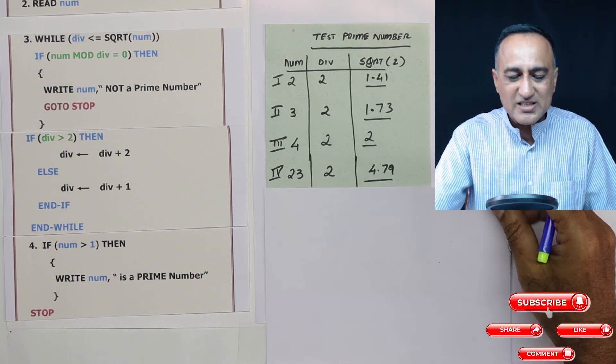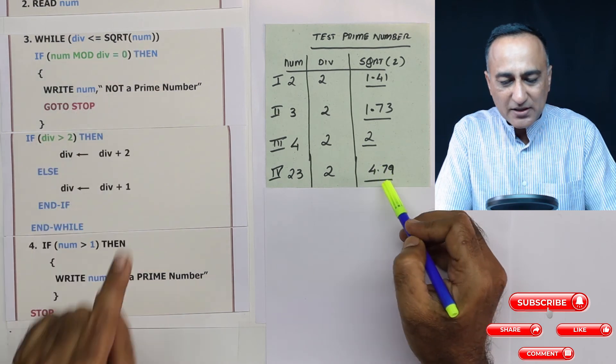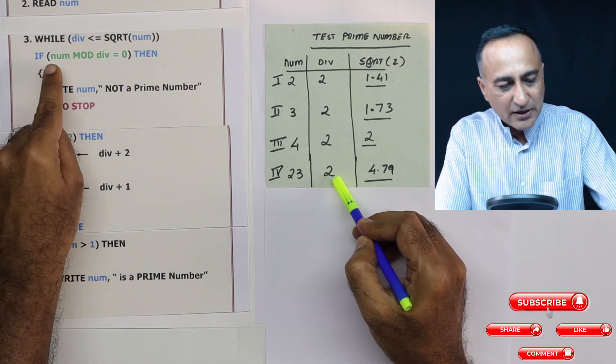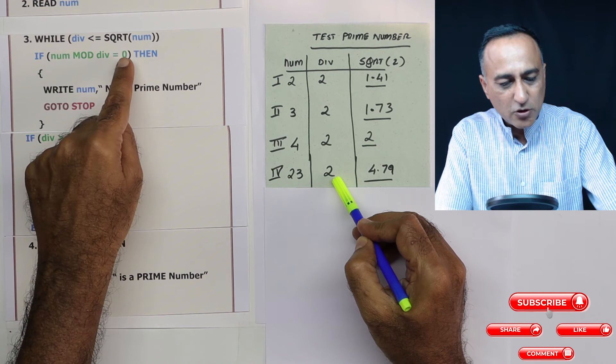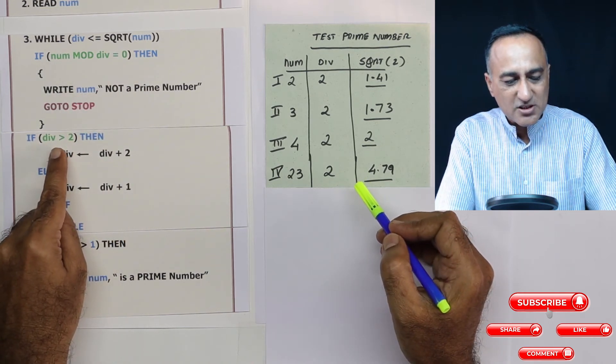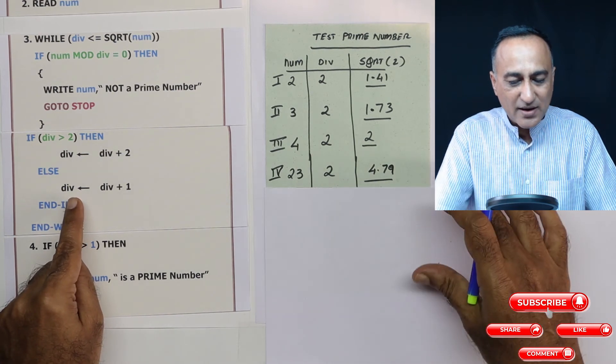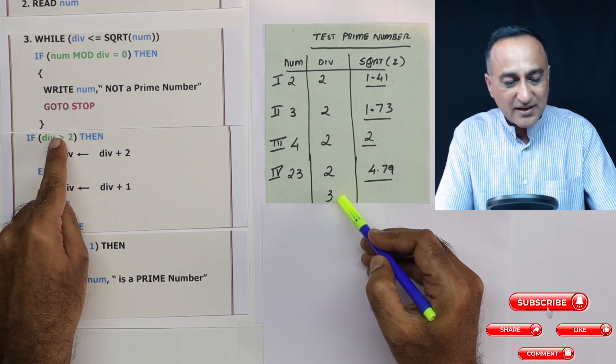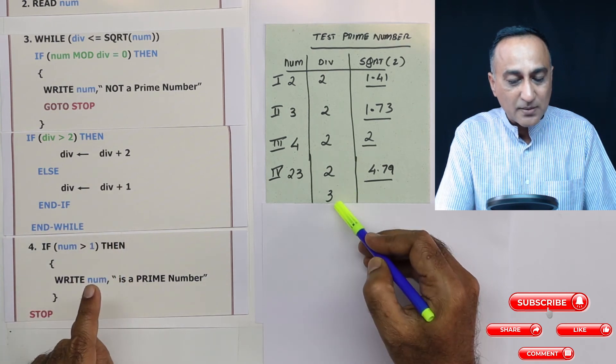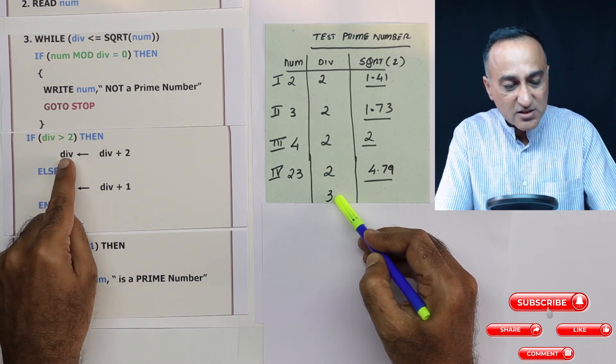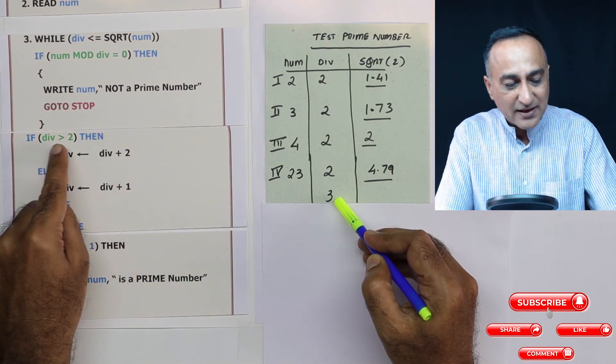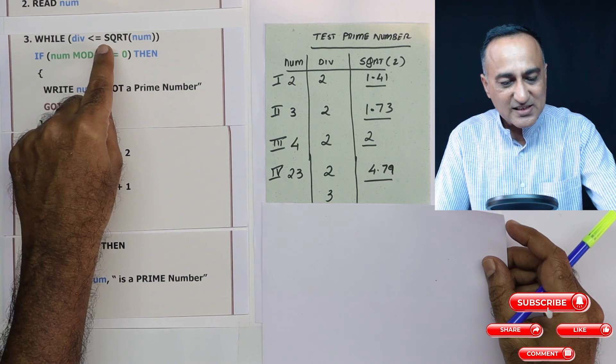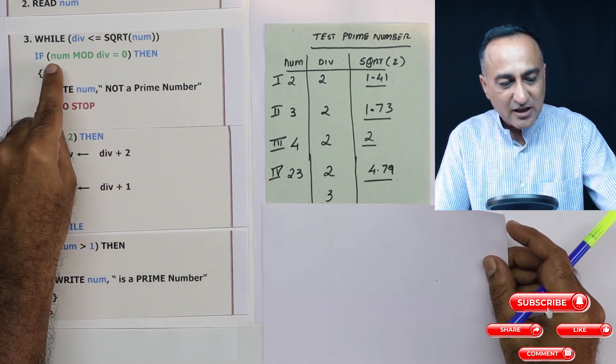Let's take now a number which is slightly higher, 23. Square root of 23 happens to be somewhere 4.79 or you can consider it equal to 5, divisor is 2. 23 mod 2, is it equal to 0? No. So I will come here, divisor is 2, is 2 greater than 2? No. So I will increase divisor by 1. Divisor now ends up becoming 3. I am increasing divisor for the first time when it is not greater than 2 by 1 because I want 2 to become 3 and from next time I want to see this 3 to become 5, 7 and so on. After it becomes greater than 2, I am going to increase the divisor by 2 numbers.